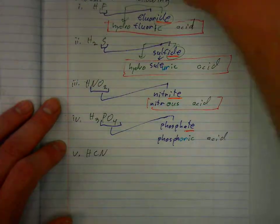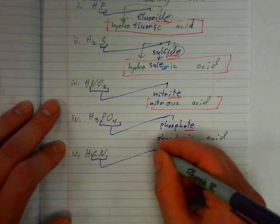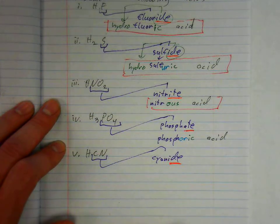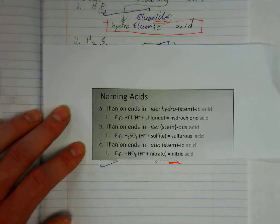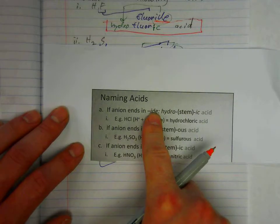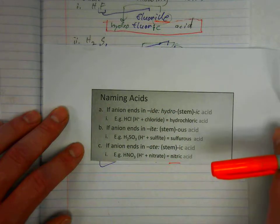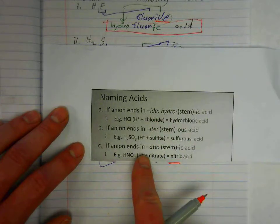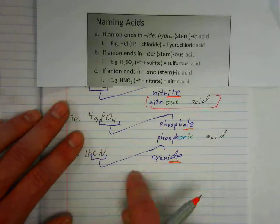HCN. The anion is the polyatomic ion, cyanide. It ends in IDE. This is interesting. Usually rule A is only for the monatomic anions, like Cl minus or I minus or F minus. But in this case, we have a polyatomic ion falling into rule one. It ends in IDE.